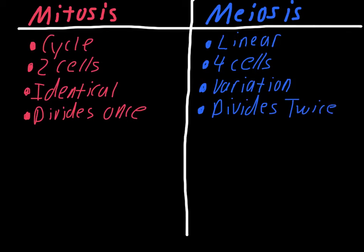As far as what the cells are used for, mitosis is used for what we call body cells — things like tissue such as your skin, muscles, and so on — all cells that would reproduce through mitosis. Meiosis is only used for reproductive cells.